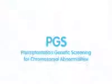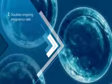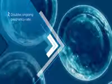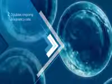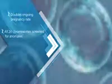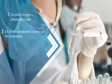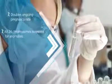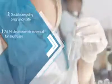PGS: Employing Iviomics PGS before IVF almost doubles the ongoing pregnancy rates. With the use of proprietary array comparative genomic hybridization or ACGH, all 24 chromosomes can be screened for anomalies, discarding the possibilities of embryonic abnormalities before implantation.